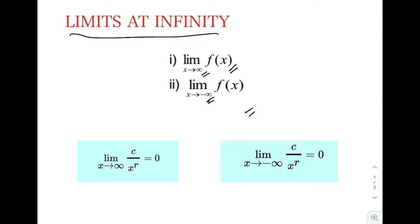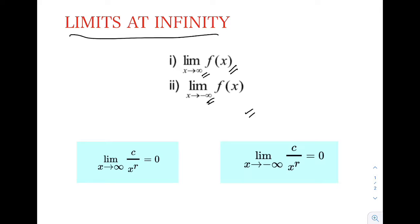We have two formulas for the limits at infinity. The first one is: the limit of c over x raised to r as x approaches positive infinity is equal to 0. The other one is: the limit of c over x raised to r as x approaches negative infinity is equal to 0, where c is a real number and r is a positive rational number.